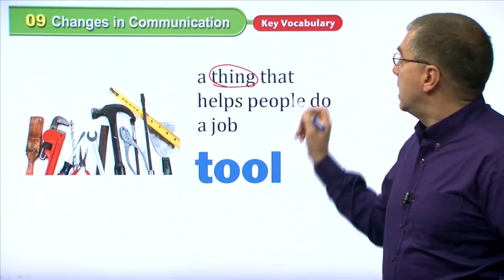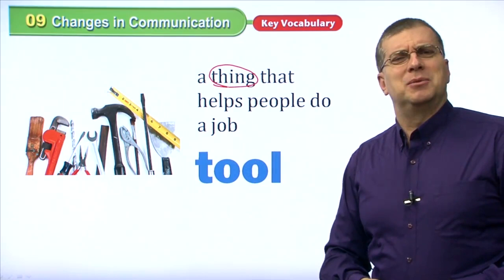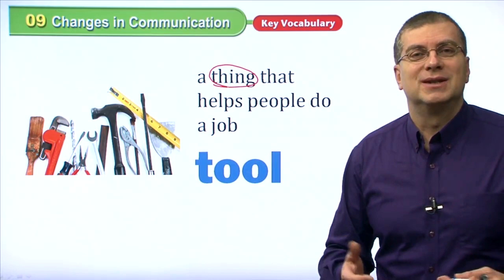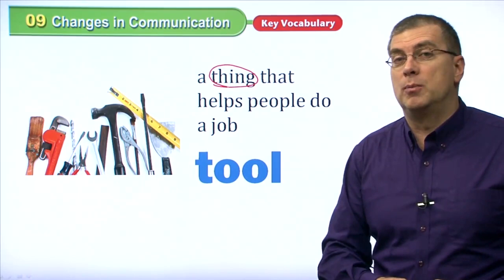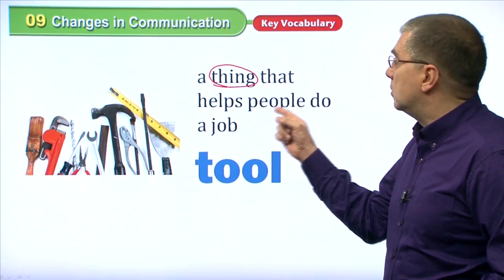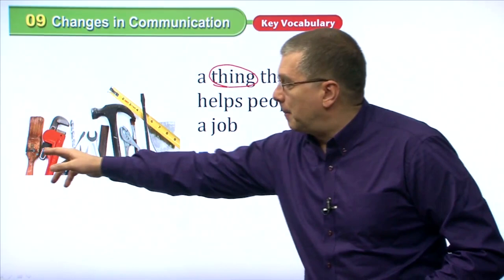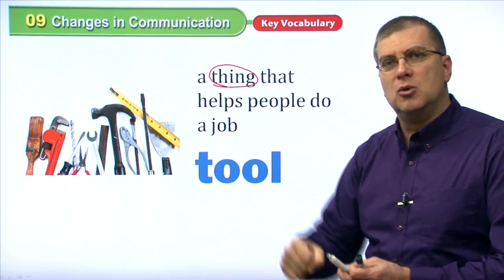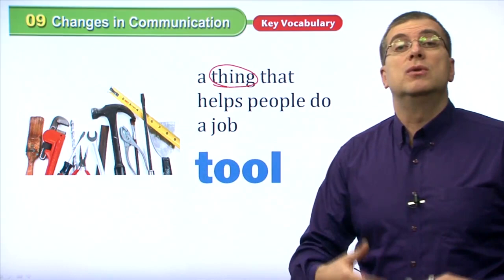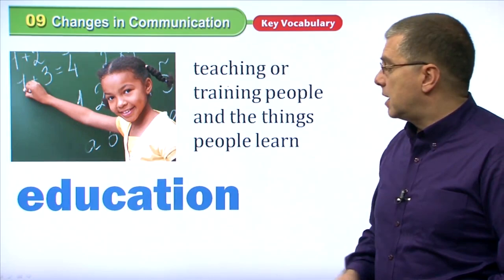A tool is an object that helps people do a job. You are students, so your job is to do homework. The tools you use are paper, a notebook, and a pencil — those are your tools. There are many jobs and many different tools. A paintbrush is a tool for a painter; a wrench is a tool for a plumber. These are all tools that people use to do their job.